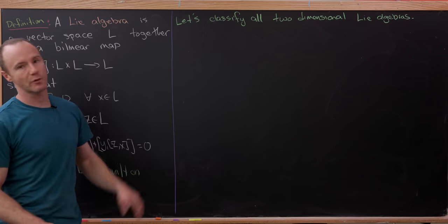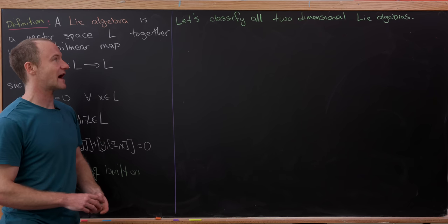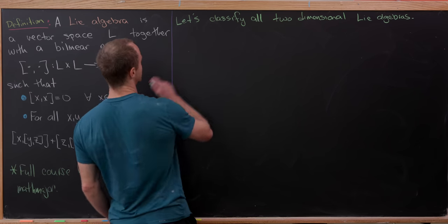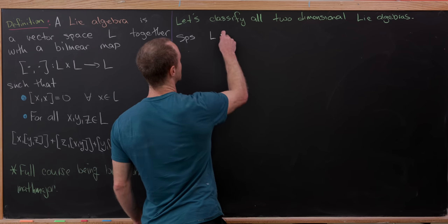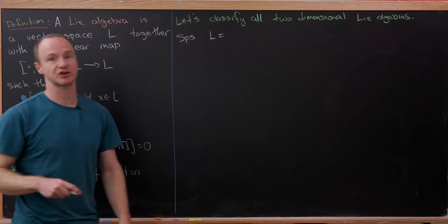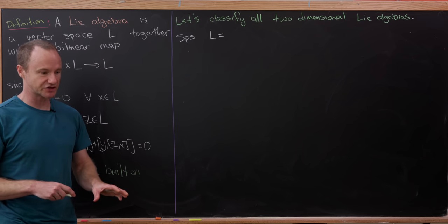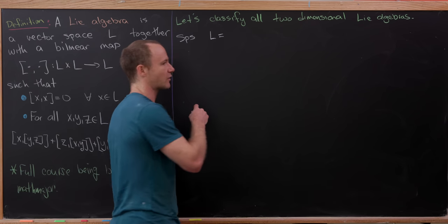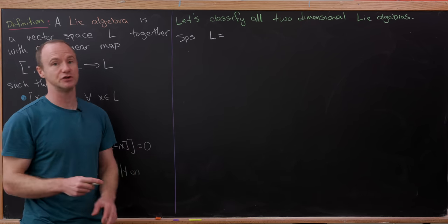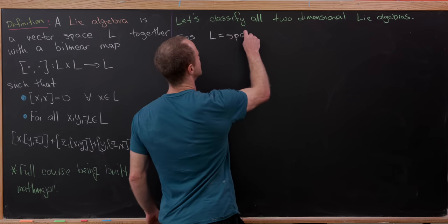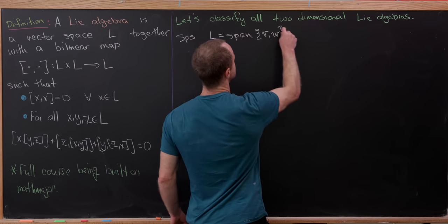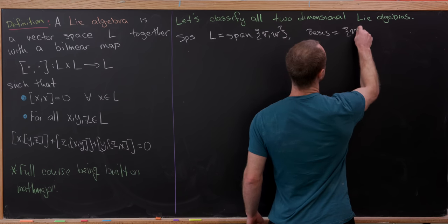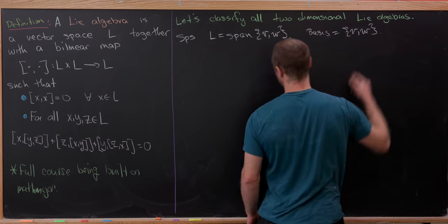So let's see what we want to do today. Our goal is to classify all two-dimensional Lie Algebras. Let's suppose that L is a two-dimensional Lie Algebra. Since it's two-dimensional, it is spanned by two linearly independent vectors — in other words, it has a basis of two vectors. Let's say those two vectors are called v and w.